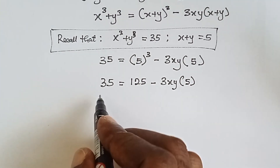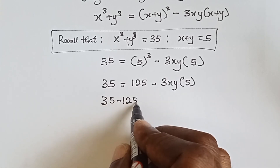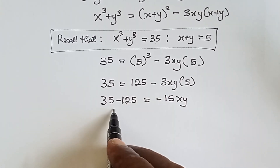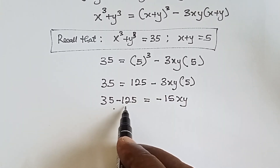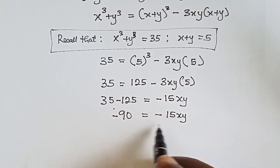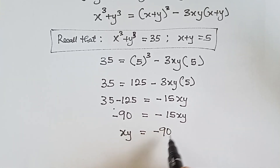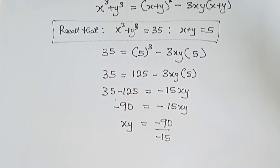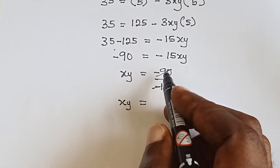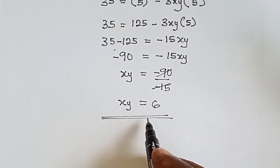Rearranging: 35 minus 125 equals minus 15xy, which gives minus 90 equals minus 15xy. Dividing both sides by minus 15: xy equals minus 90 divided by minus 15, so xy equals 6.